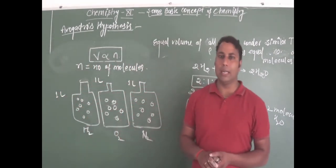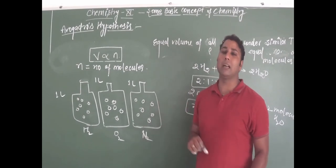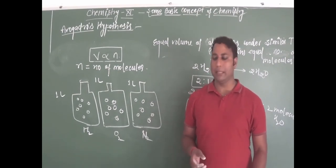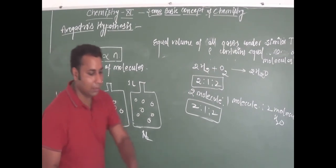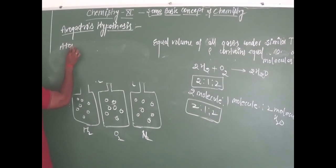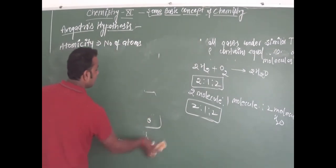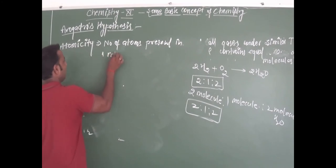This whole concept is made by Avogadro and is the application of Avogadro's hypothesis. The application of Avogadro's hypothesis is atomicity. What is atomicity? The number of atoms present in one molecule is called the atomicity of that molecule.